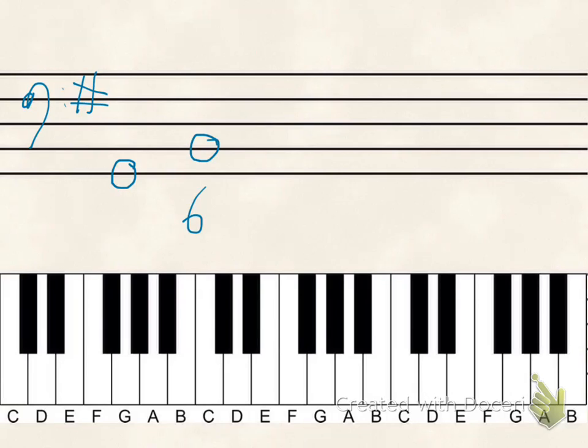Now, second inversion, that's where the 5th is in the bass. You would see the 5th, and then you would see a 6-4.